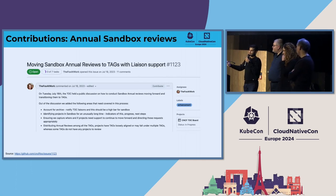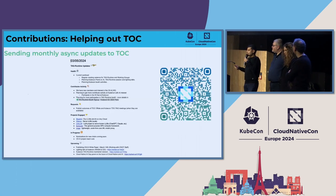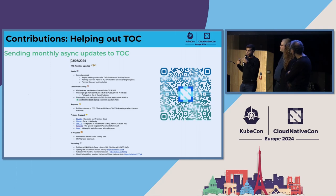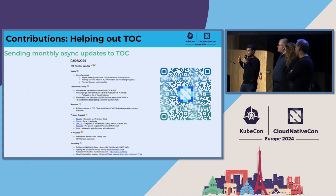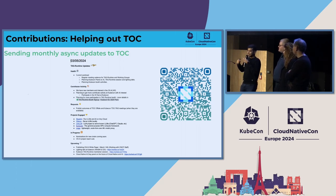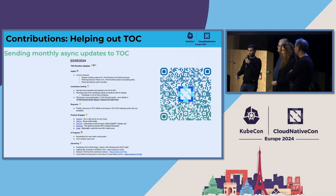Speaking of the Technical Oversight Committee, a lot of contributions are about helping the TOC in CNCF. TAGs are supposed to provide updates to the TOC, and these updates have moved from sync meetings to async updates. At TAG Runtime, we've collated a document with all updates going out every month. If you can help bubble up these updates — what projects contributed in that month, what working groups are up to, whether the TAG is working on white papers, whether we need help in any area — just helping bubble up and send across that information can be a huge value add.